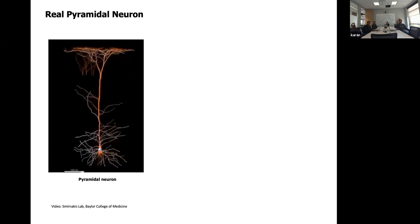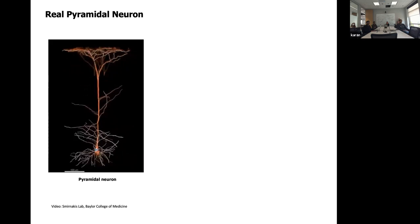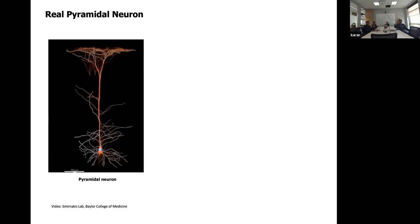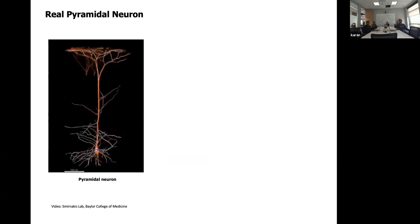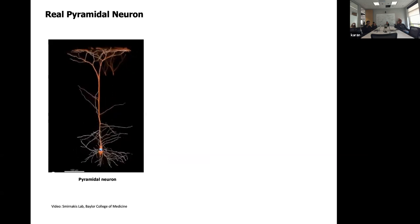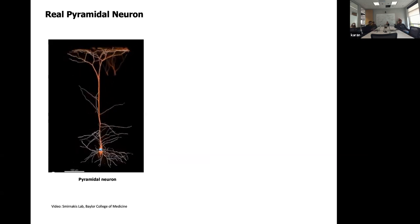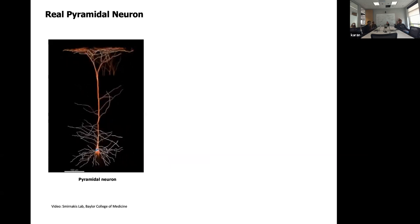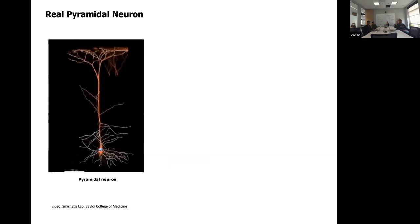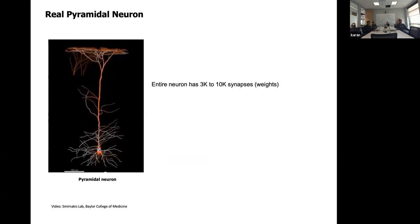Some of you may have seen this video before — it shows what a real pyramidal neuron looks like. This is a 3D reconstruction, and you can see there's a really complex tree-like structure around it. These are the dendrites of the neuron, where inputs are received. There's a lot of structural complexity and a lot of functional complexity as well. The entire neuron has thousands of synapses, and the point neuron only really covers a few hundred of them — it doesn't account for what's going on in the rest.